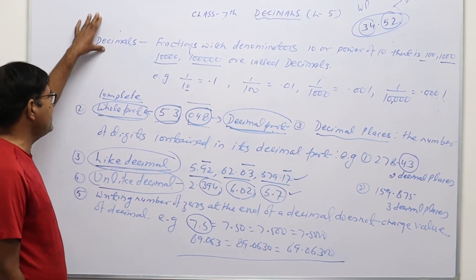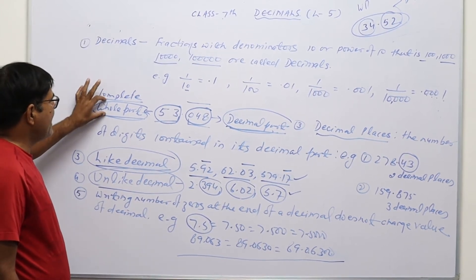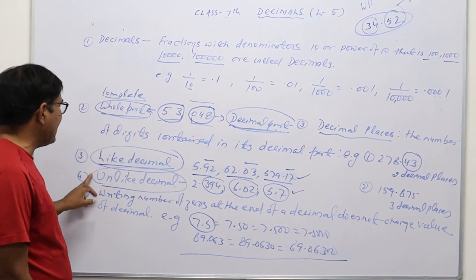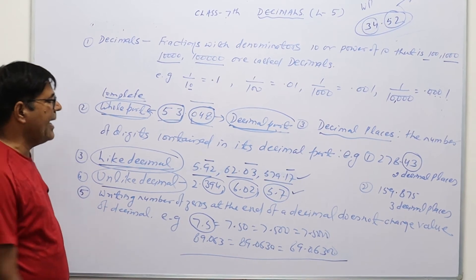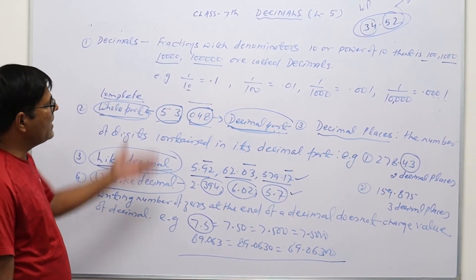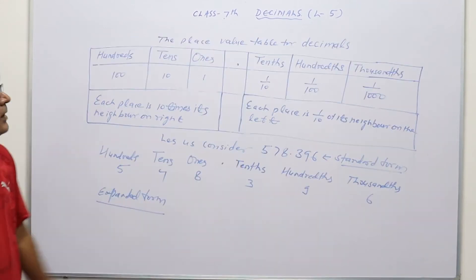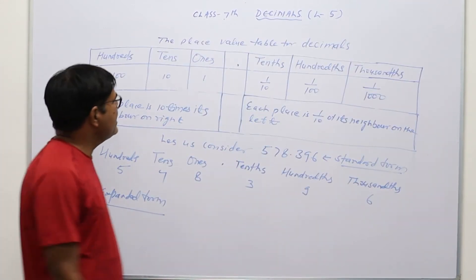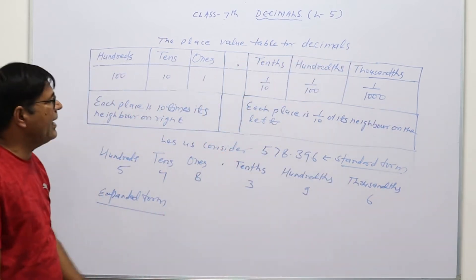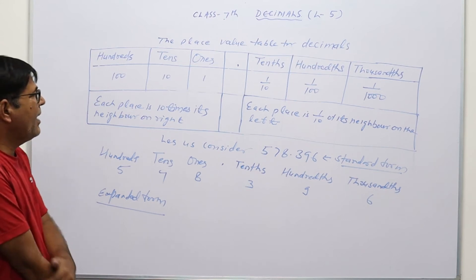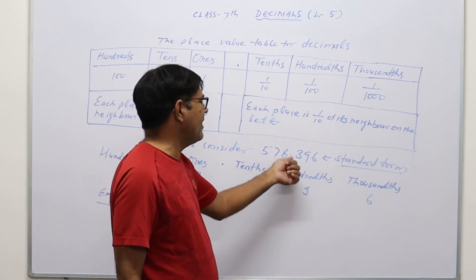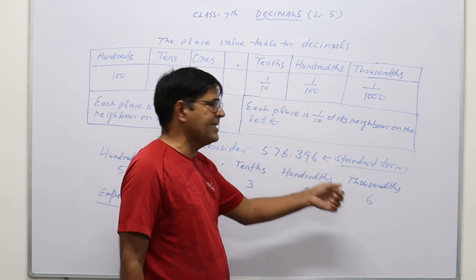So this was about decimals — the whole part of a decimal, the decimal part, like decimals, unlike decimals, and adding zeros at the end does not change the decimal value. Please pause the video and take notes. The next topic is the place value table for decimals. Let us suppose we have a decimal number — for example, the decimal number is 578.396.